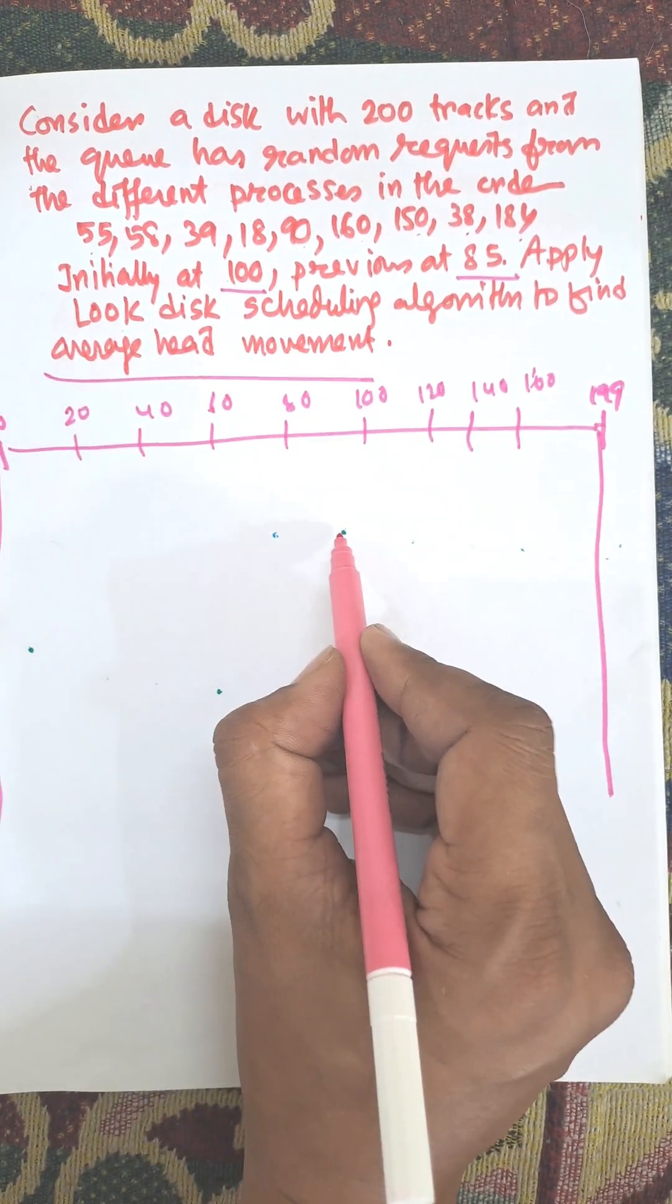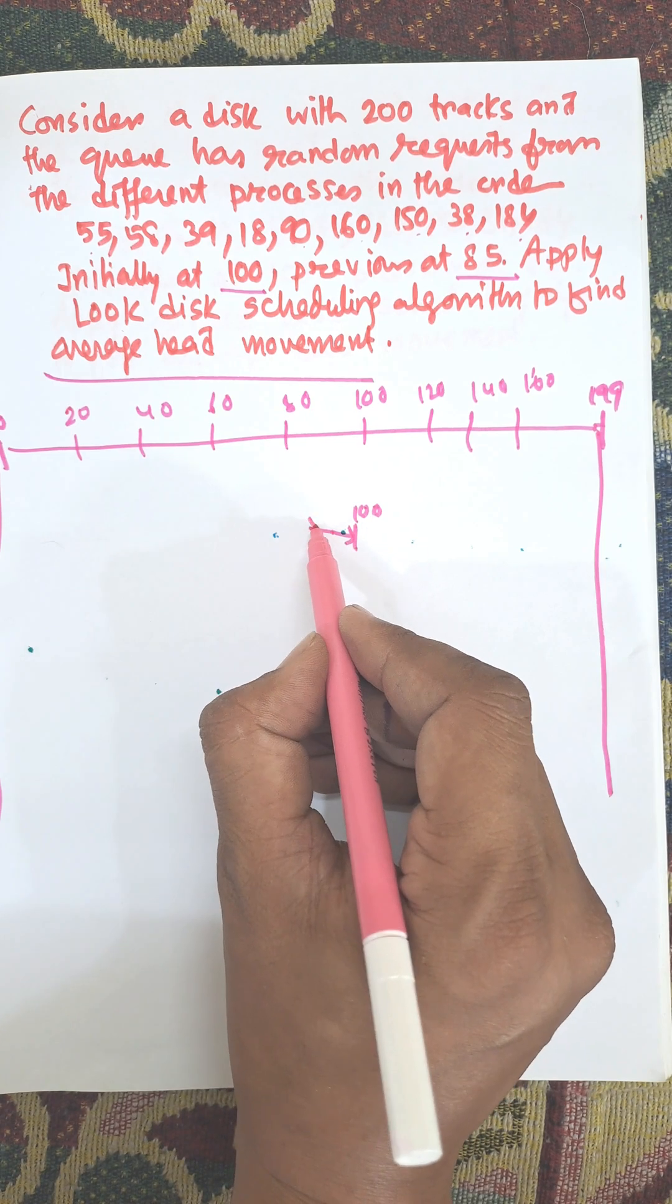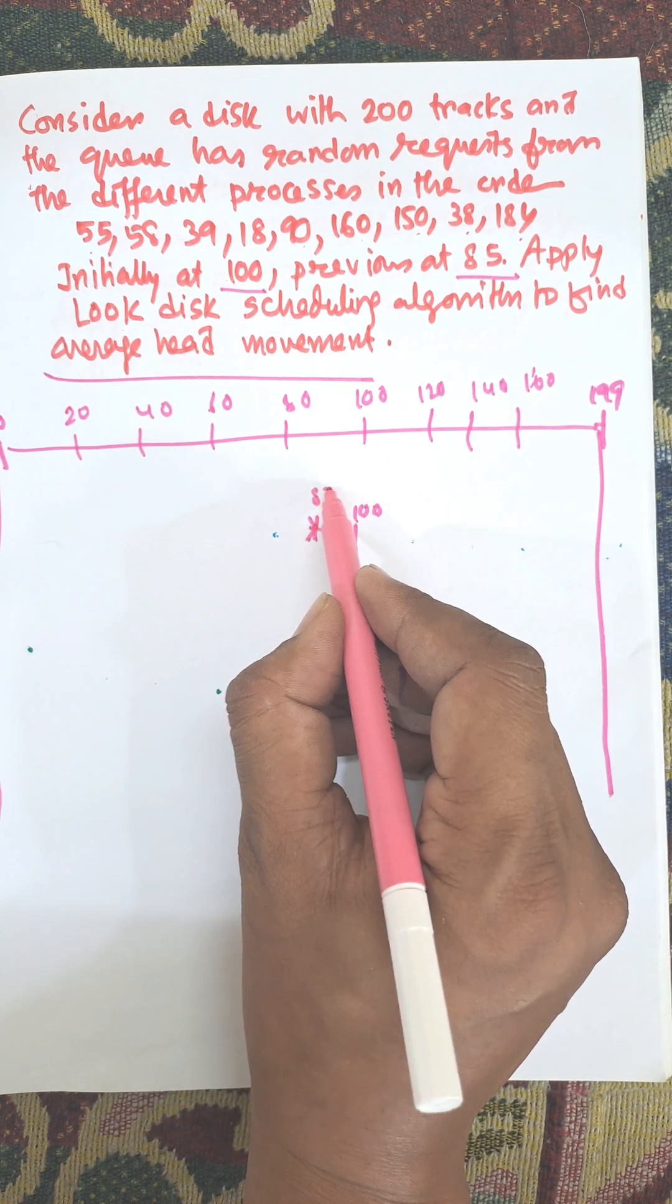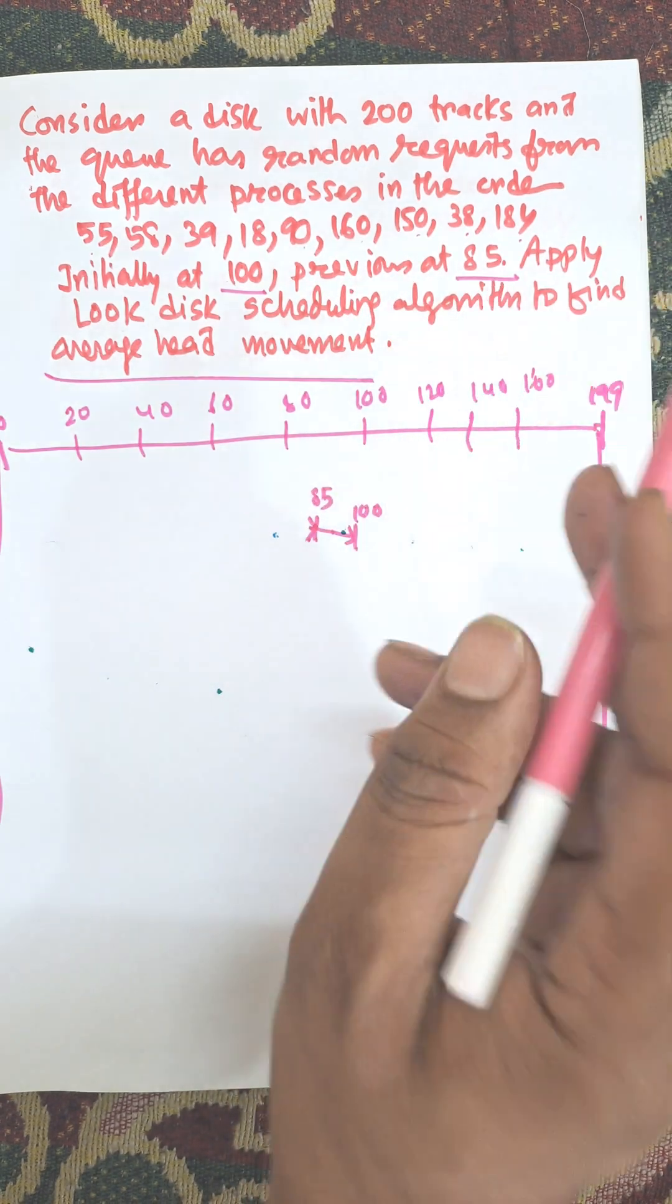Initially at 100, previous was 85. Previous was not important, but we need to draw the previous location also, as in the question previous at 85 is given.